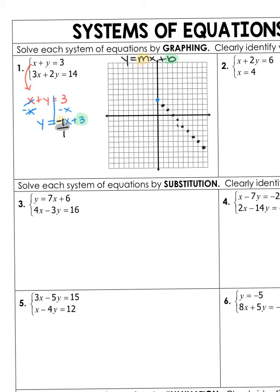I also need to go on the other side of this graph. The opposite of going down 1 and right 1 would be up 1 and left 1. So I'm going to do that on the other side. Now we'll go ahead and connect these dots. That's one of my lines graphed. Now I'm going to do the other one.